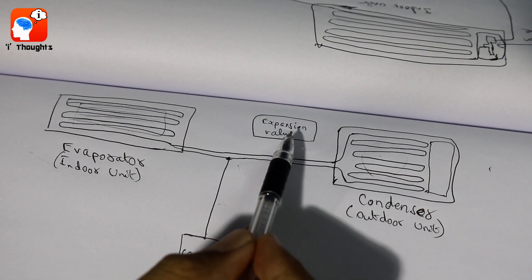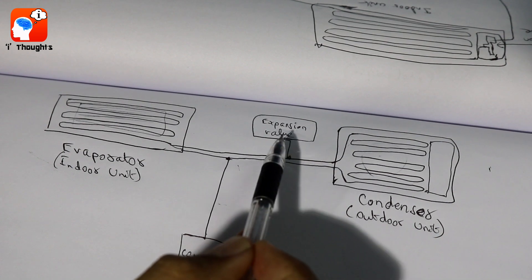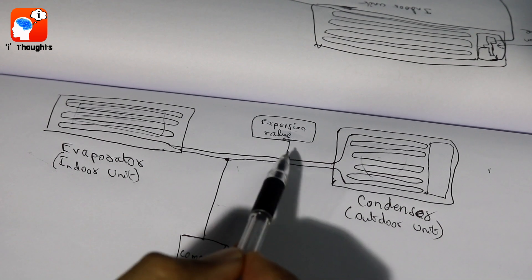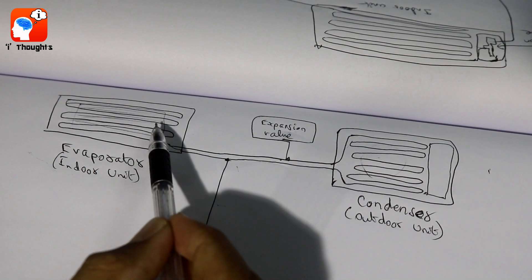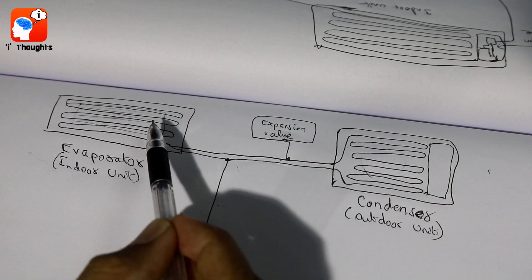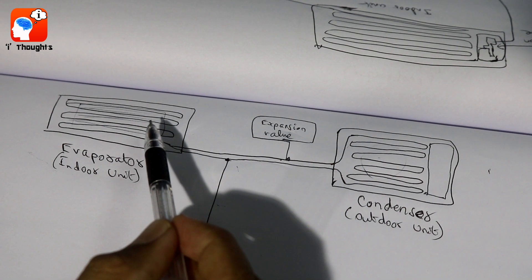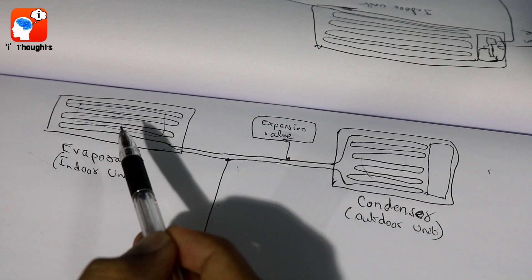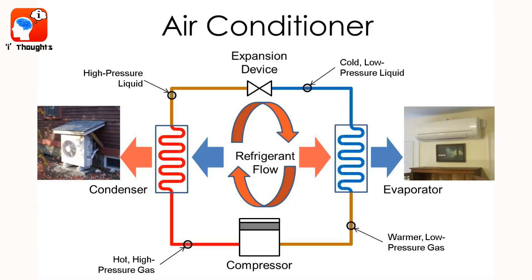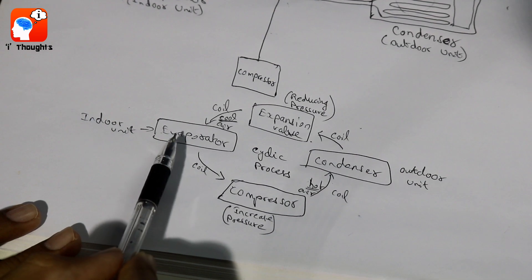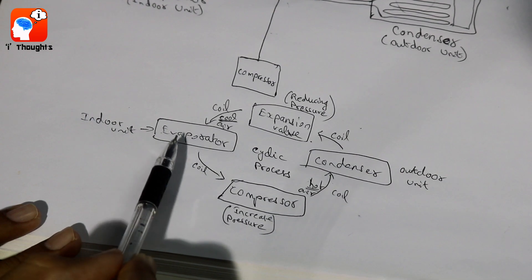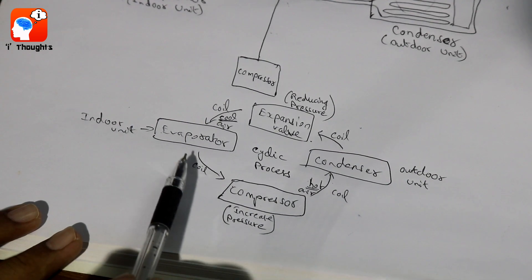After the expansion valve, the pressure will reduce. The liquid evaporates into water vapor. The water vapor is converted into the air. The indoor unit will circulate the air, so it's cool. The air is cool and cold. It is absorbed by the hot air, and it is absorbed by the coil.